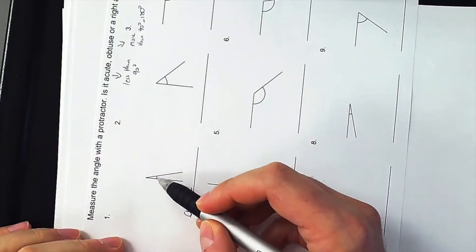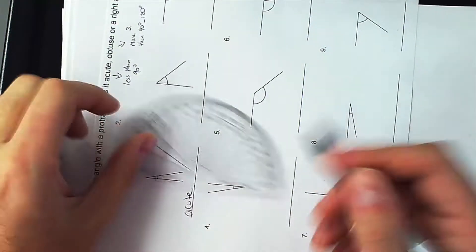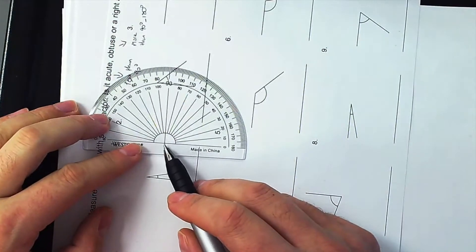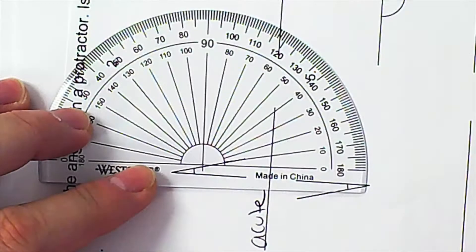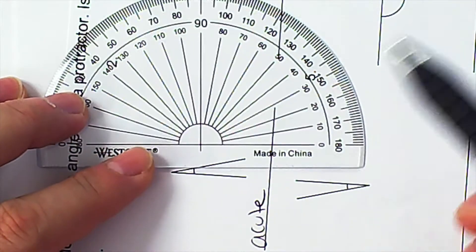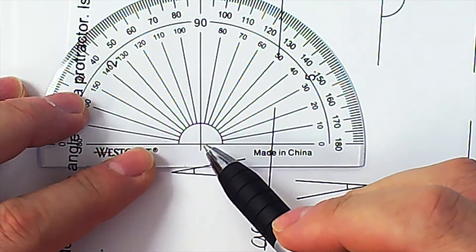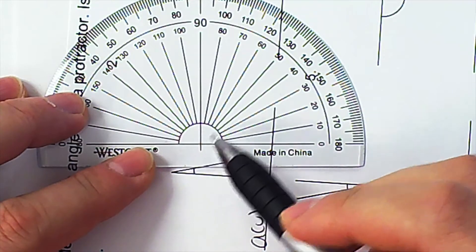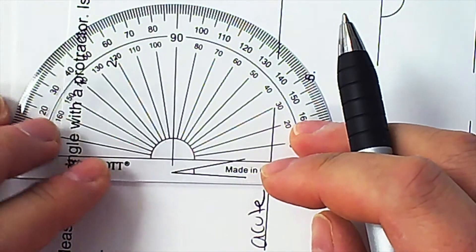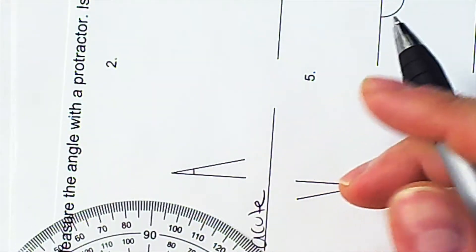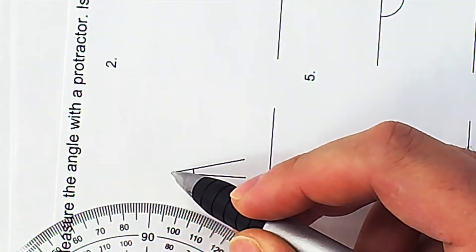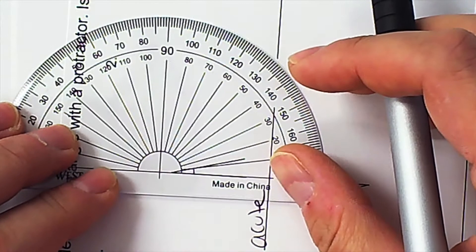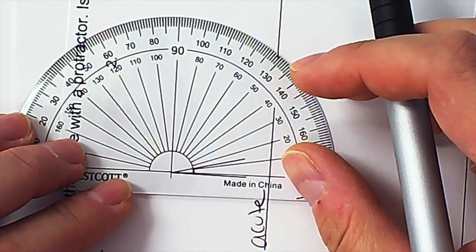To measure this little angle right here, this protractor has something called a vertex. The vertex is right here where these two lines meet in the center. You need to line up the vertex of this point here with the point over here, with the angle here, with the corner.